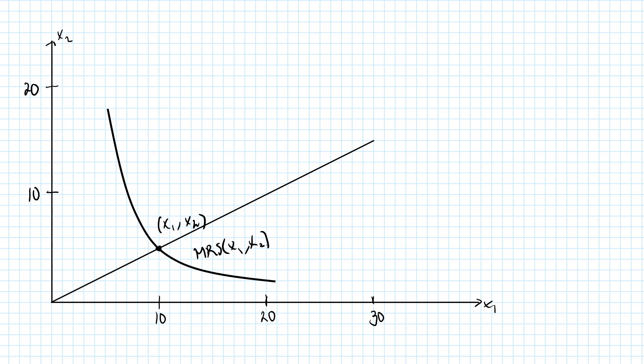Let's draw a straight line through the origin and my arbitrary bundle. If I pick any other bundle on this straight line, and if preferences are homothetic, then the MRS at this point must be the same. Since both bundles are located on a straight line through the origin, I can always denote this new bundle by cx1, cx2 for some positive constant c.